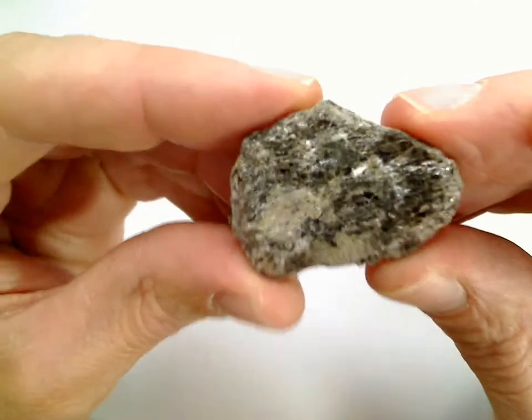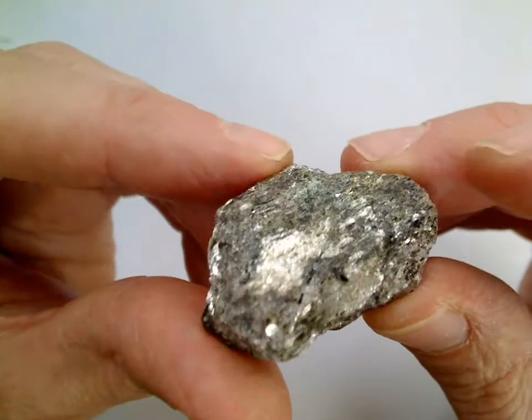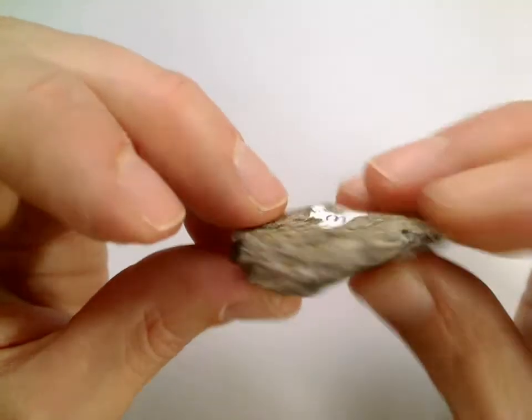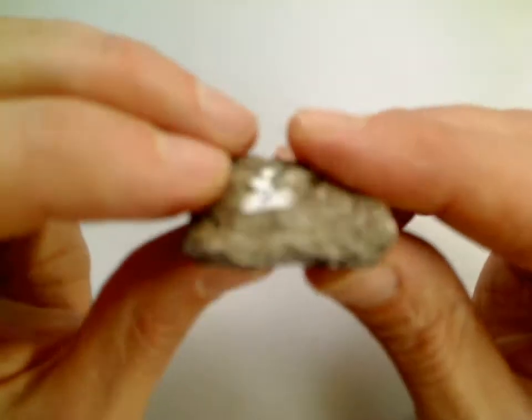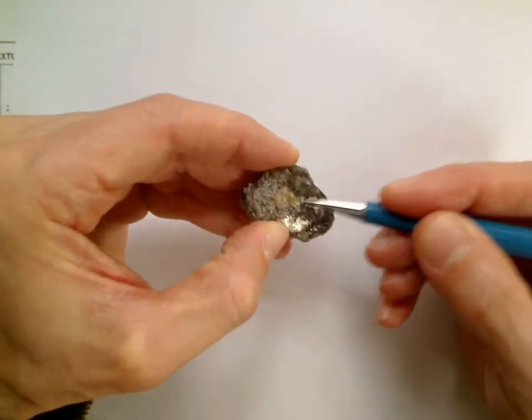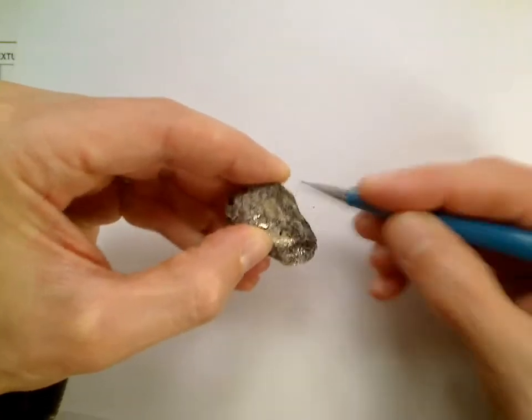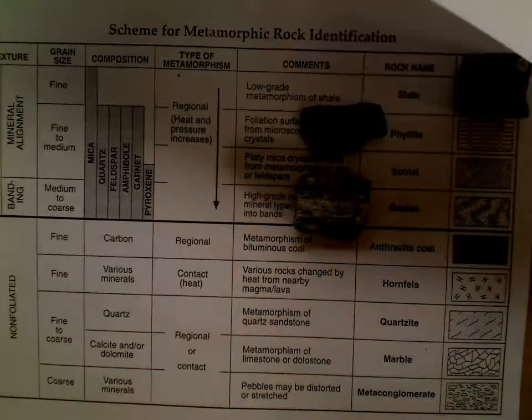Now we're going down to schist, and with this you can really start to see large mica crystals. Look how silvery that is — that's from those flaky crystals. You can usually see strong foliation layers in schist. The reason the mica looks this way is because the crystals are all very flat. I was able to flake off some crystals right there — those are the flat mica crystals. Schist represents even higher-grade metamorphism.